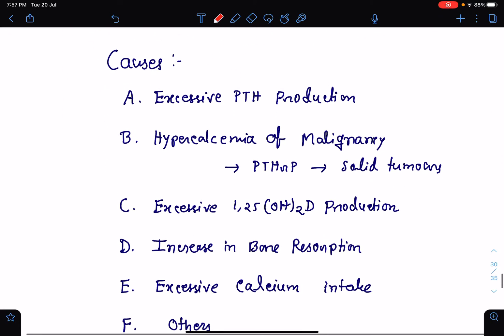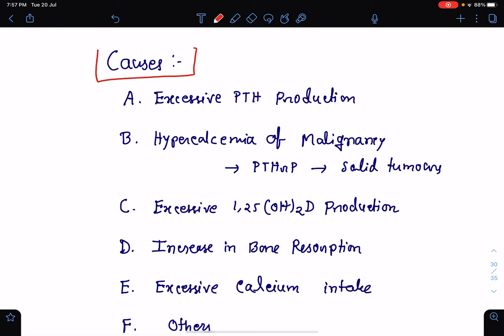What are the causes of hypercalcemia? First of all, there may be excessive parathyroid hormone production which results in hypercalcemia. 90% of the hypercalcemia are as a result of excessive parathyroid hormone production and hypercalcemia of malignancy.